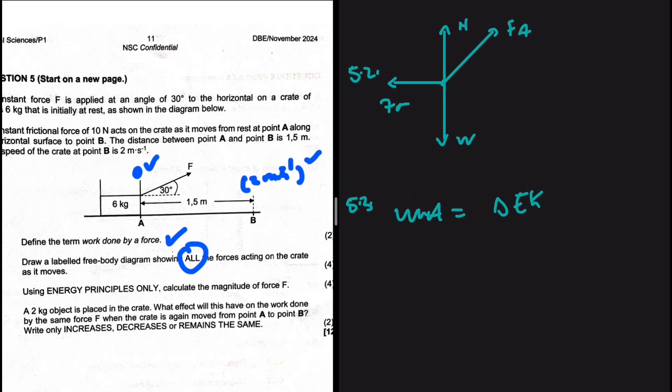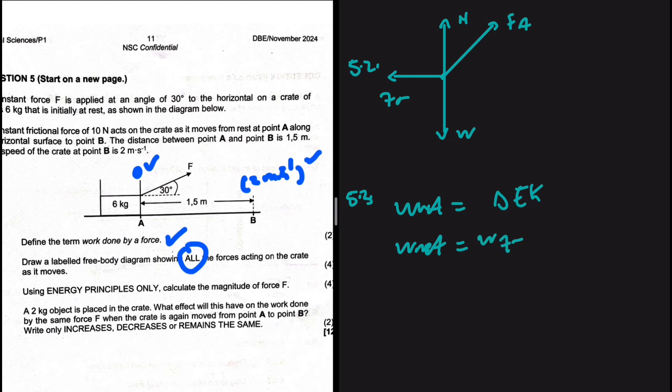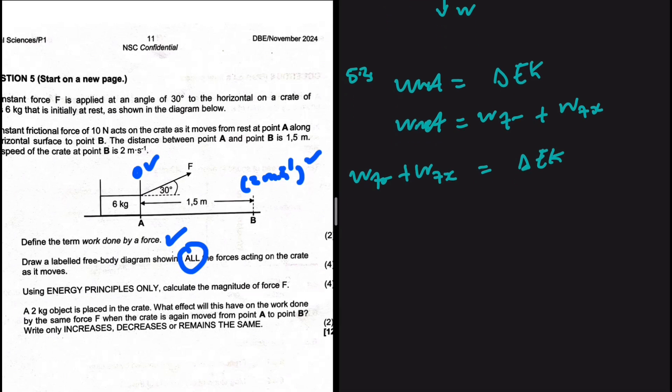But it is also equals to the summation of all the works done by the individual forces. So the frictional force does some work on the object, and the horizontal component of the applied force also does work on the object. So we're going to have the work done by the frictional force plus the work done by the horizontal component of the applied force equals to the object's change in kinetic energy. So the work done by frictional force is going to be Fr multiplied by delta x multiplied by cos of 180 plus the work done by the horizontal component of the force applied. So that is Fx delta x cos of 0. It's cos of 0 because the object is going from A to B, which is the same direction as the horizontal component of the force applied. And this should be equals to half MVF squared minus a half MVI squared.